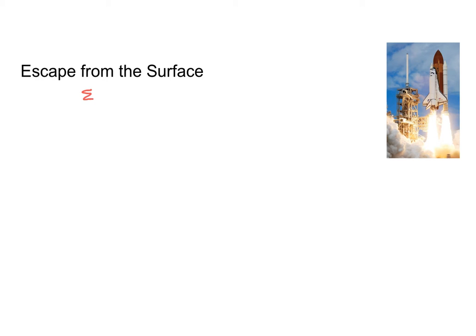I want to go about deriving the equation that we use to find escape velocity, because I think it's a pretty simple derivation and something helpful for you all to know so you can understand where this equation comes from. We're going to start by talking about conservation of energy, which states that our initial energy is equal to our final energy.